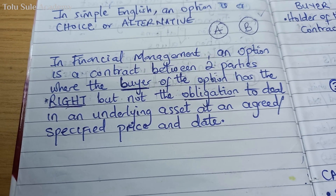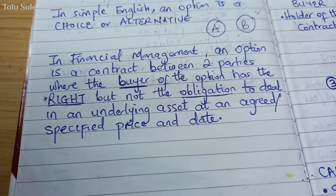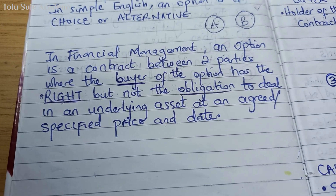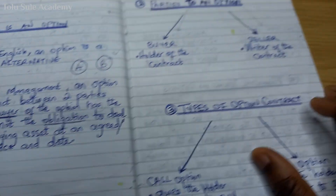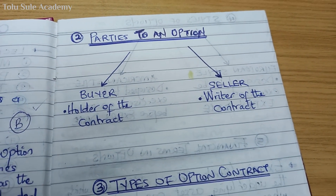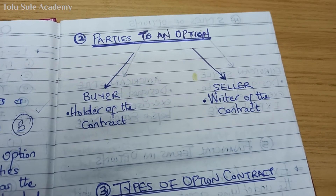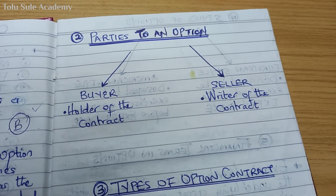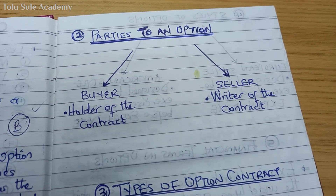You have to understand that you have the right as the buyer, but not the obligation — meaning it's not compulsory to deal in an underlying asset at an agreed date and at a specified price. There are some important terminologies in this definition, like 'between two parties.' The parties are the buyer, who is the holder of the contract, and the seller, who is the writer of the contract.